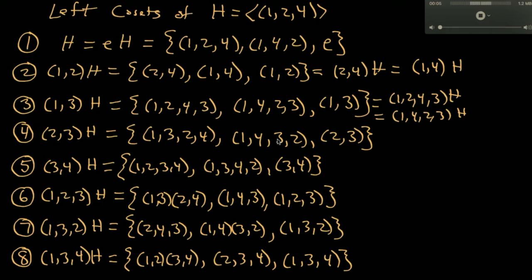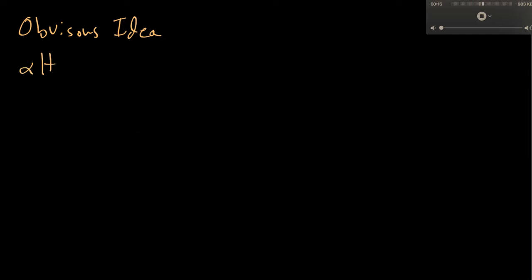Now that we have the list of left cosets for H, the question becomes: can we find a binary operation that will turn the set of left cosets of H into a group? There is an obvious thing to try: take the left coset αH and the left coset βH, and define a new operation ⊗ on them.